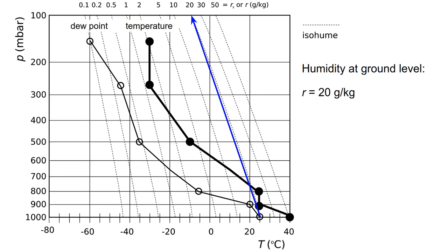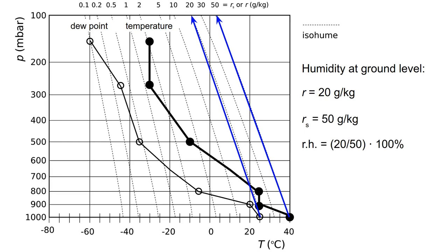We can find the relative humidity if we know how much water vapor the air can hold at maximum without condensation taking place. For that, you follow the actual temperature up. That temperature at ground level — 40 degrees Celsius here — has a humidity of 50 grams per kilogram. So the relative humidity is 20 divided by 50 times 100 percent, which equals 40 percent. To summarize: the relative humidity is found by determining the actual amount of water vapor in the air — that has to do with the dew point — divided by the maximum saturation amount, which is indicated by the actual temperature.